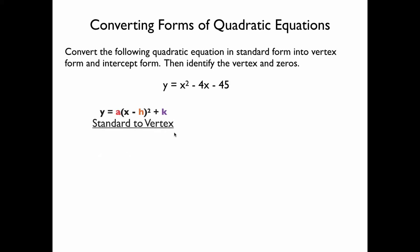The first thing I'm going to do is take standard form and turn it into vertex form. Analyzing vertex form, it includes a binomial squared, which is a compact way of writing a perfect square trinomial. Luckily, we know how to create perfect square trinomials because we studied how to complete the square. So I'm going to start with y equals x squared minus 4x minus 45. To complete the square, I need to start with x squared plus bx, so I'll isolate that by adding 45 to both sides. To complete the square, I divide b by 2 and then square it.